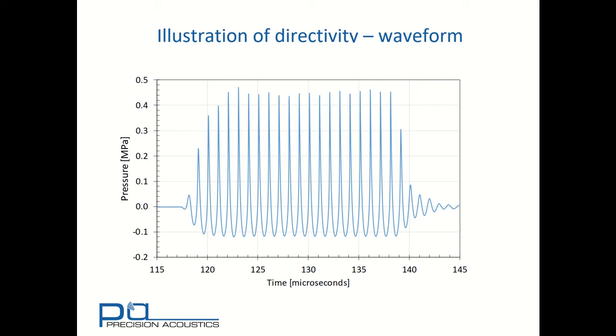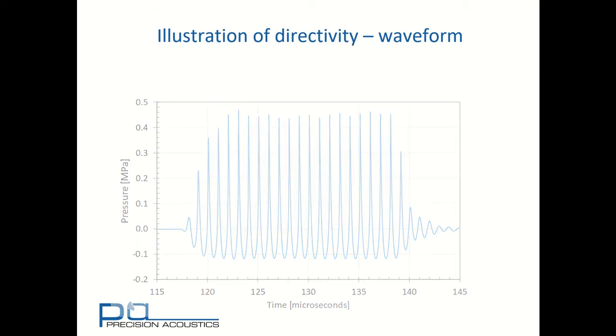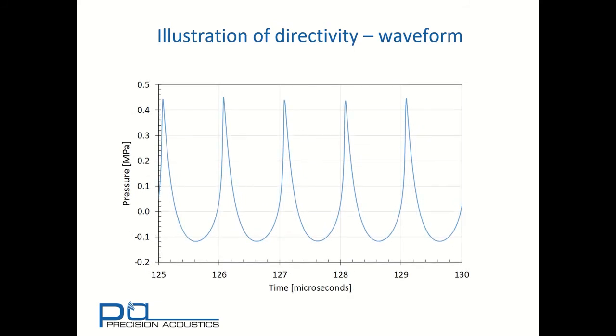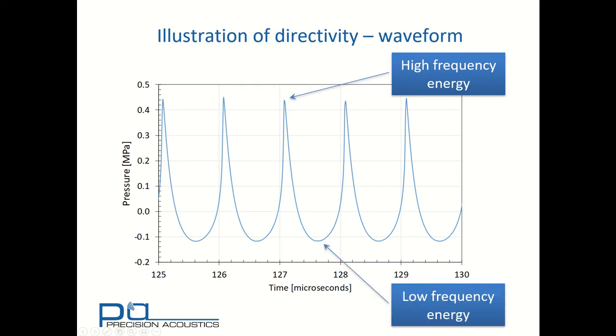In fact, let's look at a few cycles in detail to consider the asymmetry. We can clearly see that in addition to the peak positive excursion being much greater than the peak negative excursion, we also have a much sharper peak positive signal rather than peak negative. In fact, if we look at the spectral components needed to make up this signal, we find that most of the high frequency energy is contained within the positive peaks, whereas the low frequency energy is contained within the negative peaks.